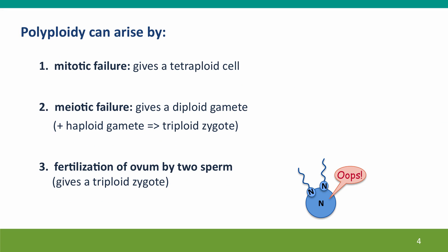Polyploidy can arise in different ways: by mitotic failure, giving a tetraploid cell; and by meiotic failure, either where meiosis fails in the same way that mitosis fails, giving a diploid gamete instead of the usual haploid gamete, or where mating fails and an ovum is fertilized by two sperm, generating a triploid zygote.